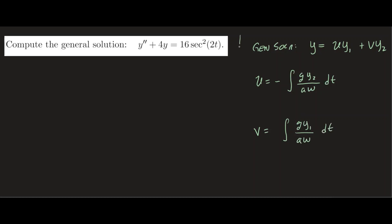And v is given by the formula integral of g times y1 over a times Wronskian dt. Now these formulas, make sure you know them. There is a proof on how to derive this formula, feel free to look at those videos if you're interested. So now let's go ahead and compute.